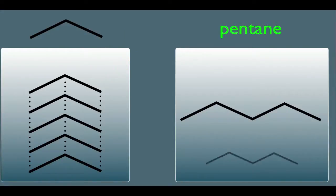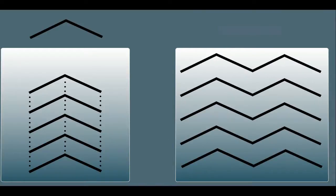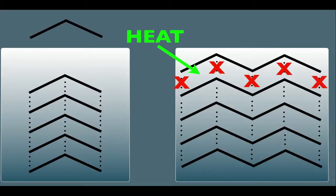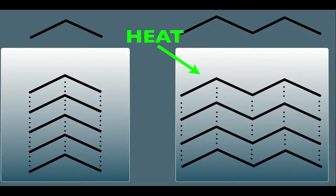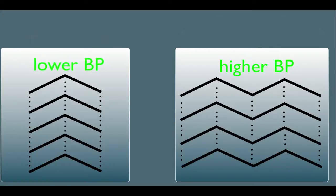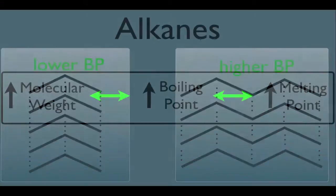Now let's analyze pentane the same way. Again, these would represent the intermolecular forces. Notice, compared to propane, pentane has a greater number of intermolecular forces per molecule. So that means to evaporate pentane, we'd have to break more intermolecular force bonds to get it to evaporate. Pentane is going to have a higher boiling point and propane is going to have a lower boiling point. It simply takes more energy to separate the pentane molecules than it does to separate the propane molecules, and higher energy therefore means a higher boiling point.